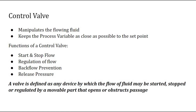A control valve keeps the process variable as close as possible to the set point. The functions of a control valve are: it is used to start and stop the flow, regulate the flow, prevent backflow, and release pressure. From these functions we can derive the definition: a valve is defined as any device by which the flow of a fluid may be started, stopped, or regulated by a movable part that opens or obstructs the passage.